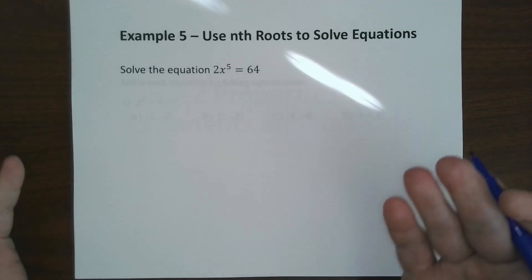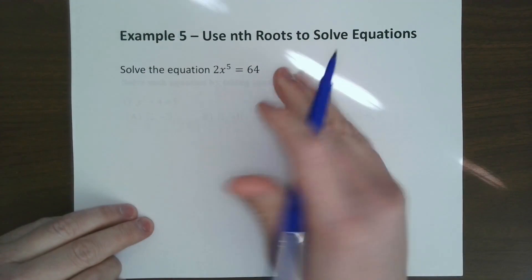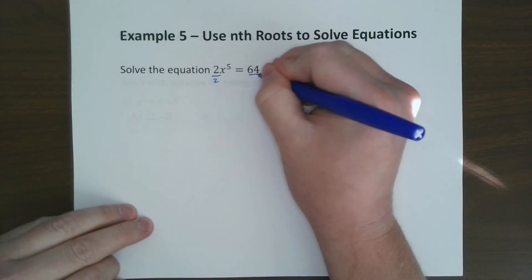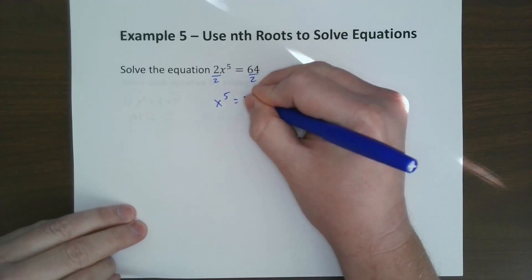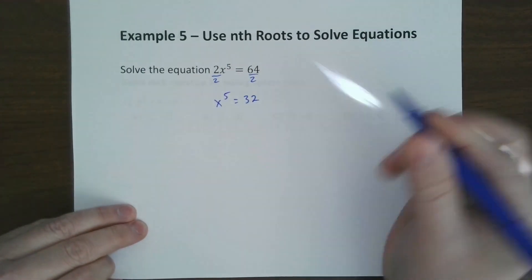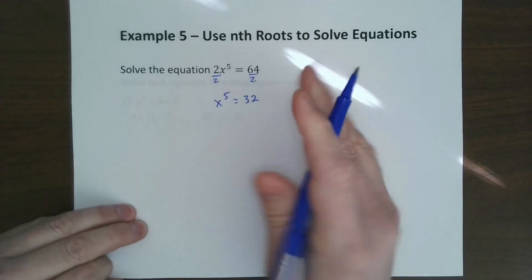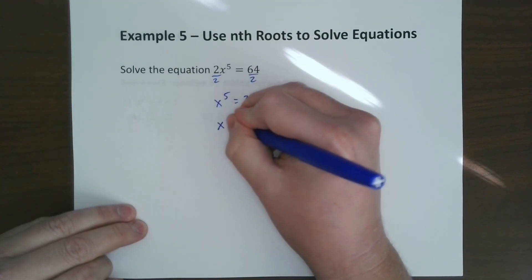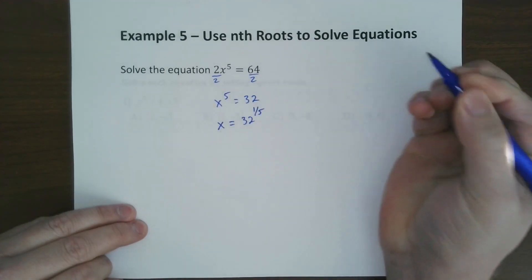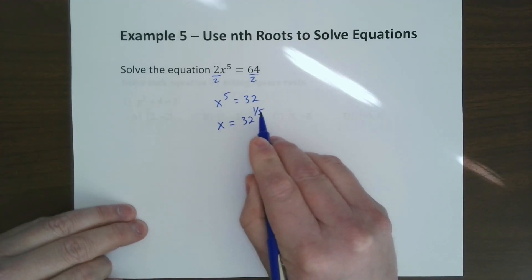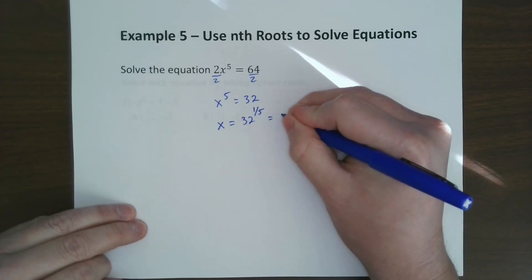We can use roots to solve equations. The way we do this is we solve for x like normal. Divide by 2, so we have x to the fifth equals 32. To get rid of the exponent, we could do the root function, but I'm going to use the fraction instead. This is the same as 32 to the one-fifth. Since this is odd, we just have one answer, which is 2.